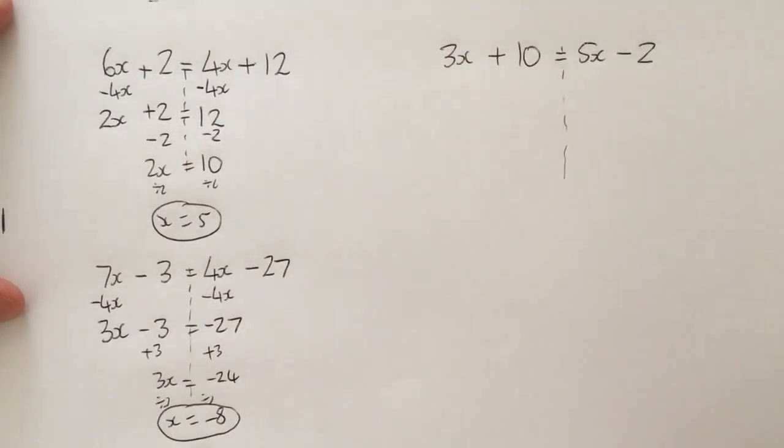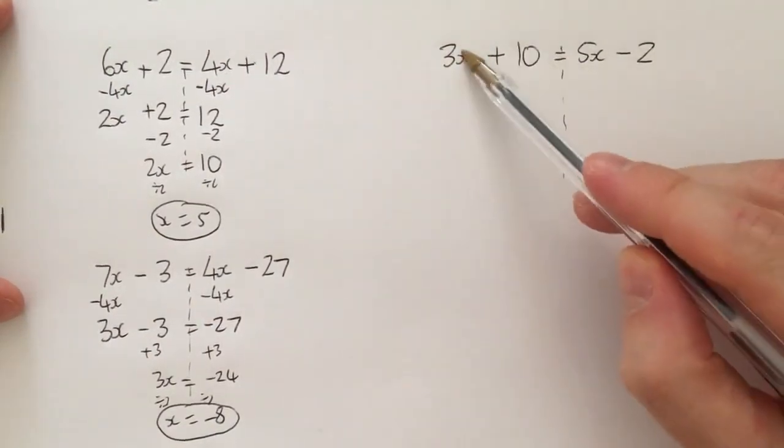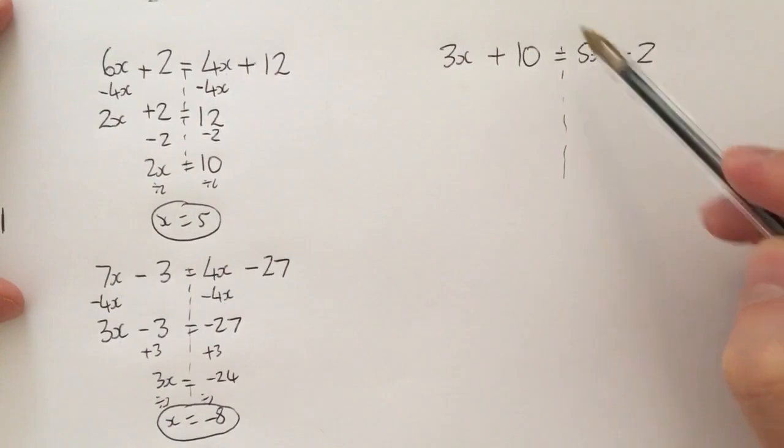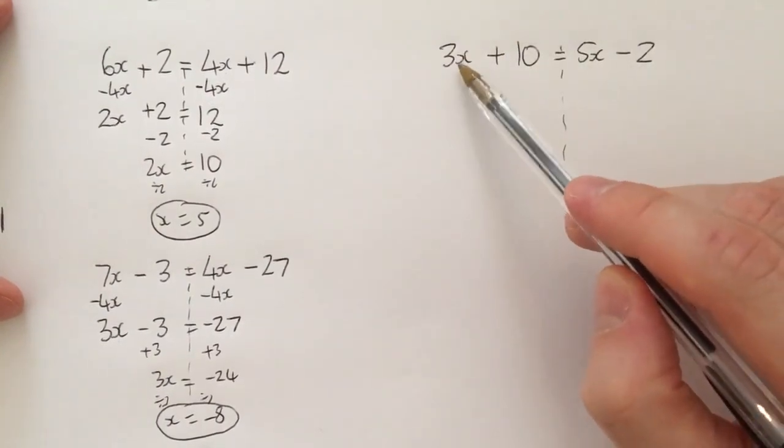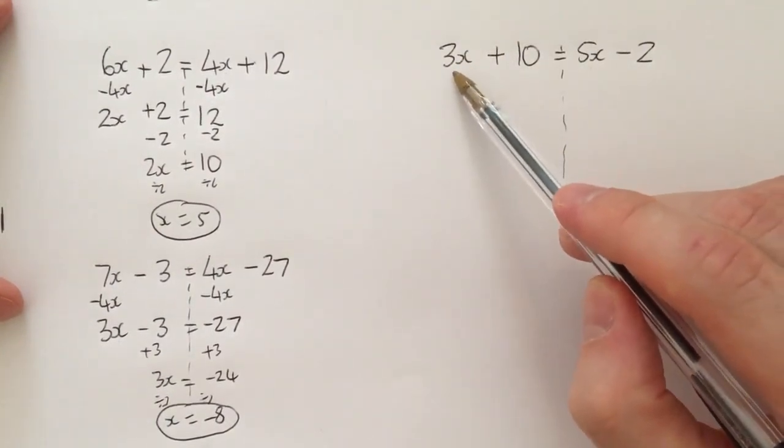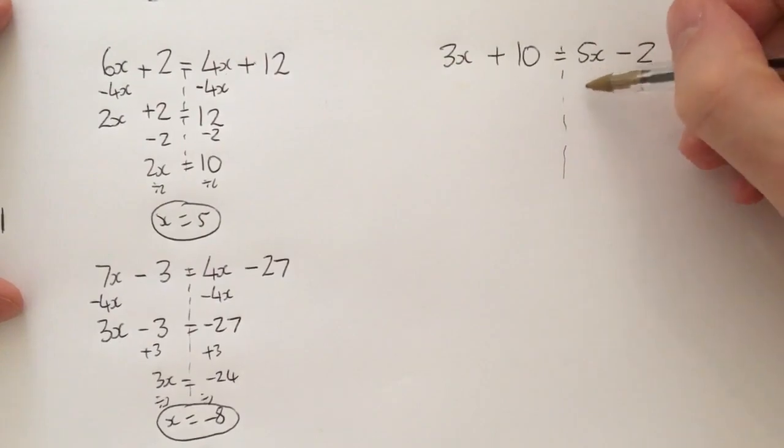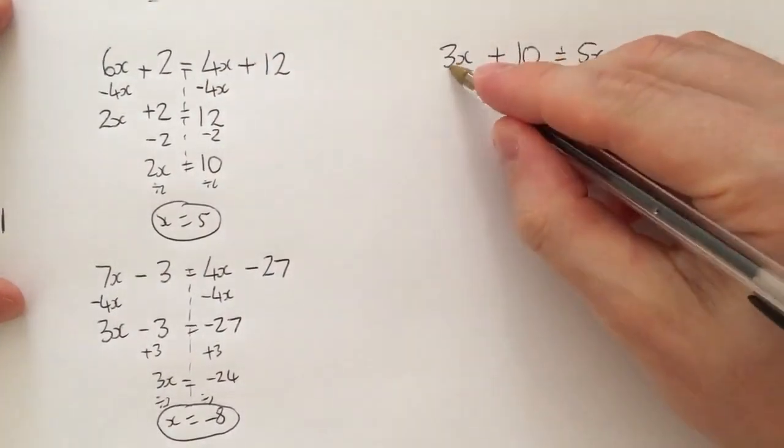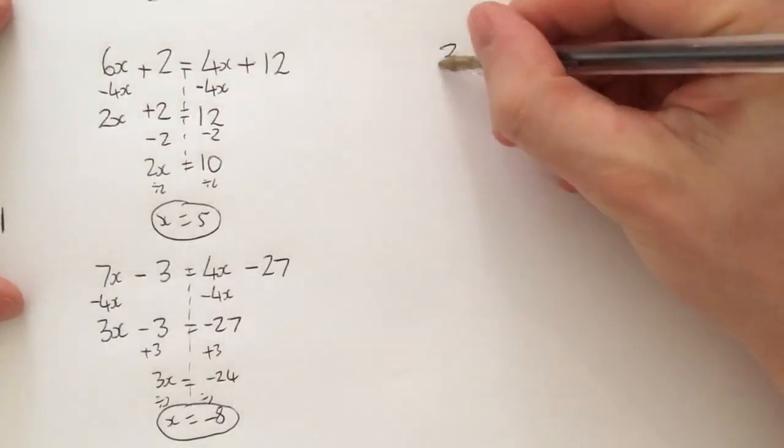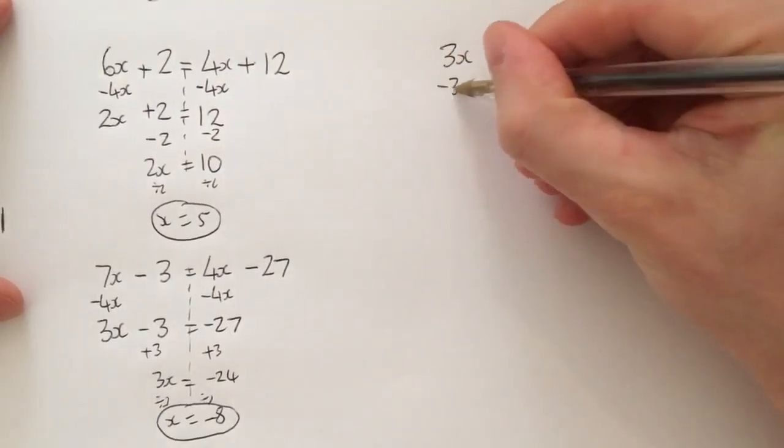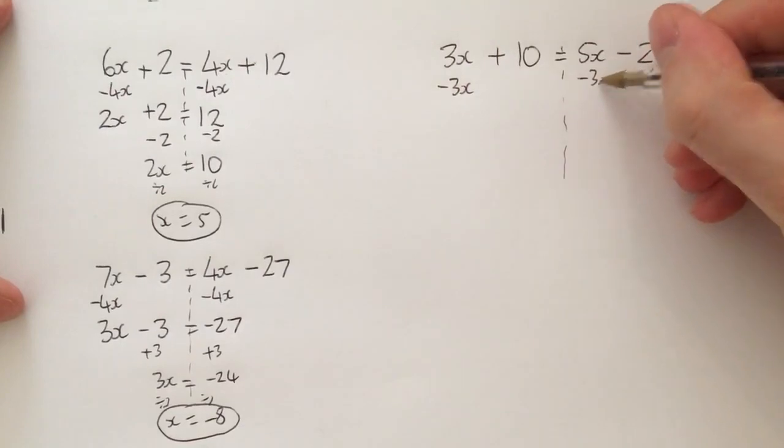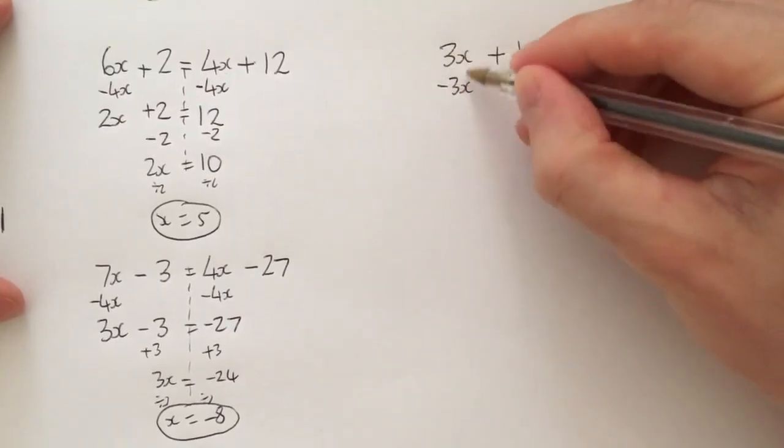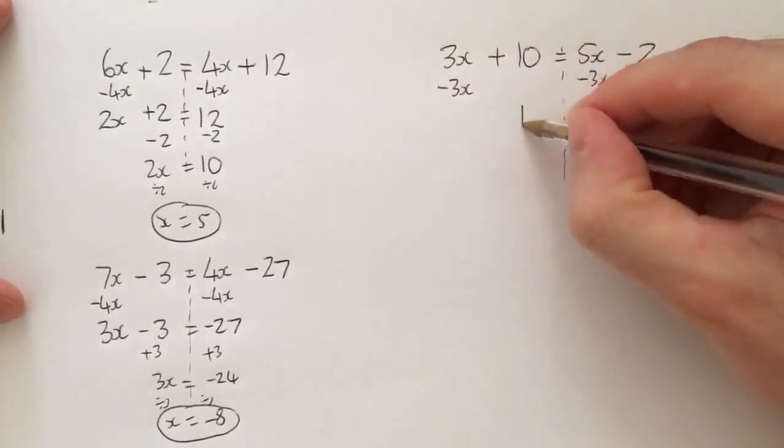But if you look here, positive 3x, positive 5x, the 3x is actually the smaller one in this case. So I'm not going to just minus 5x because I saw that here and here. I'm looking for the smaller one. The smaller one is actually 3x, and because it's positive 3x, I'm going to minus 3x here. That now disappears because that becomes zero. Positive 10 is on this side by itself. 5x take away 3x is 2x take away 2.